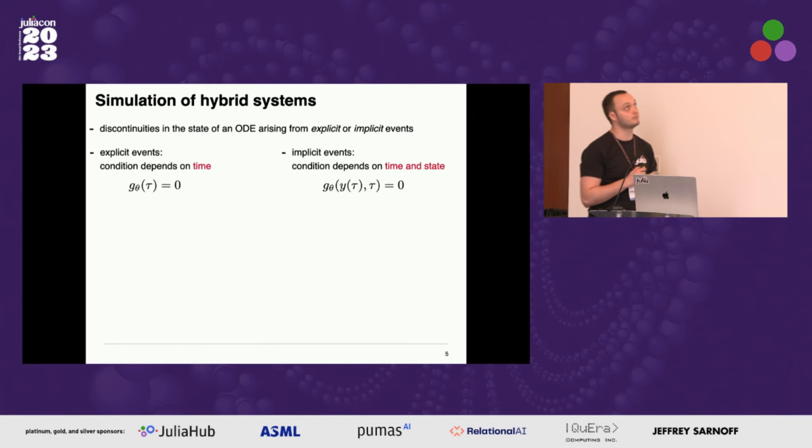Discontinuities can arise from two different sorts of events. First, you have explicit events, sometimes called discrete events, which depend only on time. Ahead of solving your differential equation, you can compute all your event times and set stopping times in your solution. Then at these points some event will be triggered.